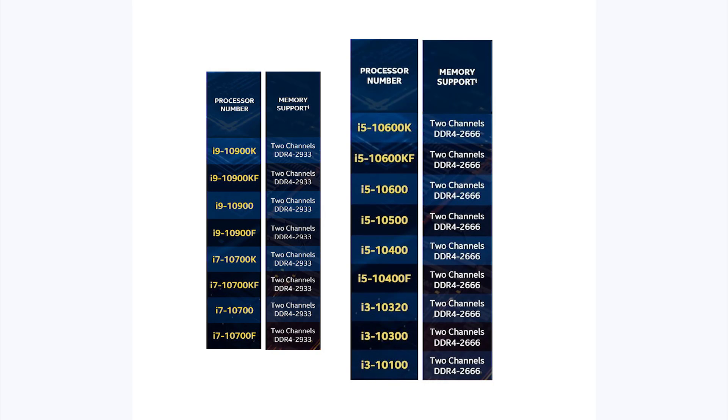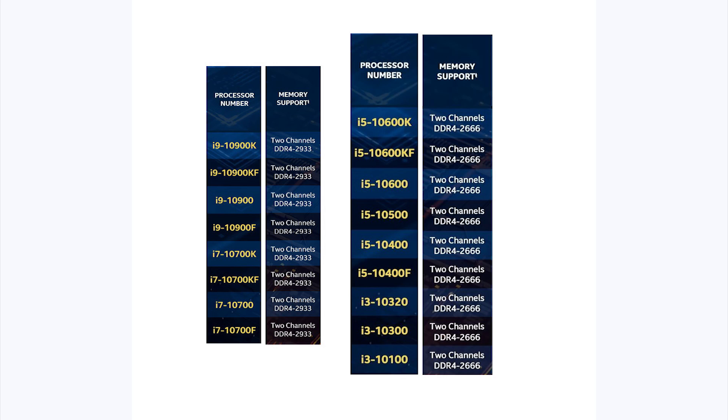Regarding RAM speeds, by default i7 and i9 support higher memory speeds. Unlocked processors can be overclocked further. One disadvantage is that i9 and i7 processors have a default RAM speed of 2933.5 MHz, while i3 and i5 are at a lower speed from a budget point of view. Next, for integrated graphics, we have the iGPU model.